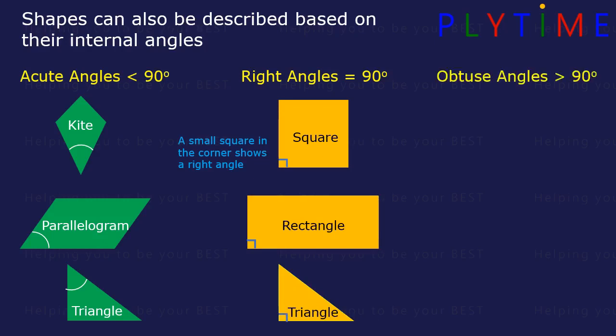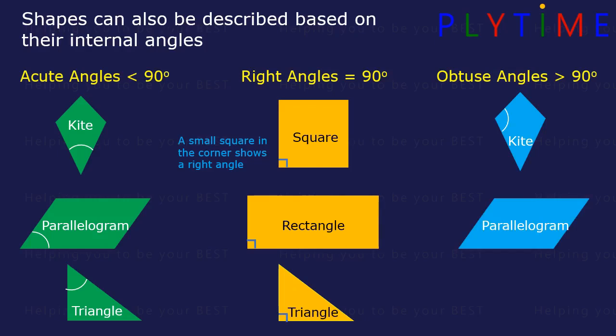Obtuse angles are more than 90 degrees — for example, this angle in the parallelogram or this angle in the trapezium. And here's one in a right angle triangle.